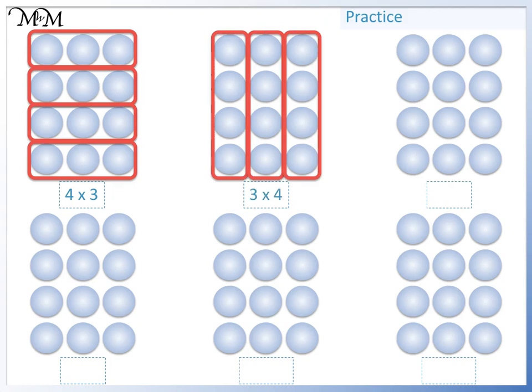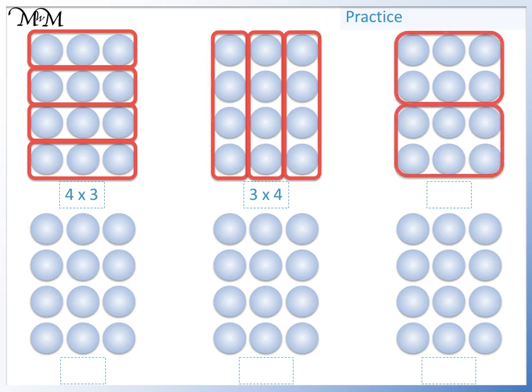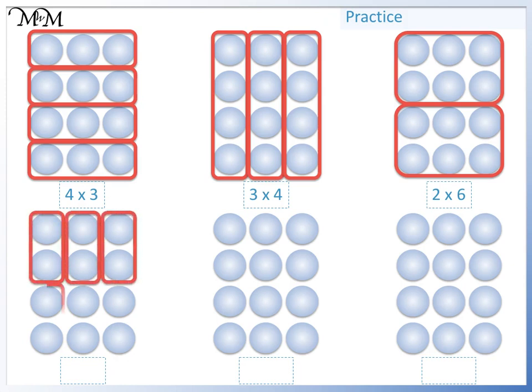We could have groups of 6. There are 1, 2 groups of 6, so 2 times 6. We can have groups of 2. There are 1, 2, 3, 4, 5, 6 groups of 2, and we can write this as 6 times 2.